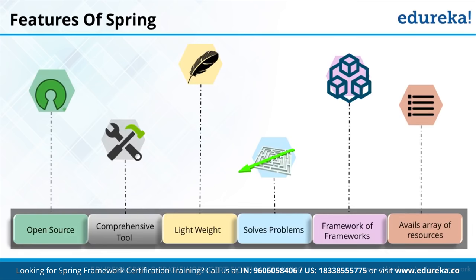On top of the core container, we have AOP — Aspect-Oriented Programming — along with aspects, instrumentation, and messaging. AOP focuses on cross-cutting concerns, which are concerns like security that must be addressed across all modules of a project. Above that is the data access/integration layer for accessing databases. There's also a web container for writing Spring MVC web applications with servlets and portlets.